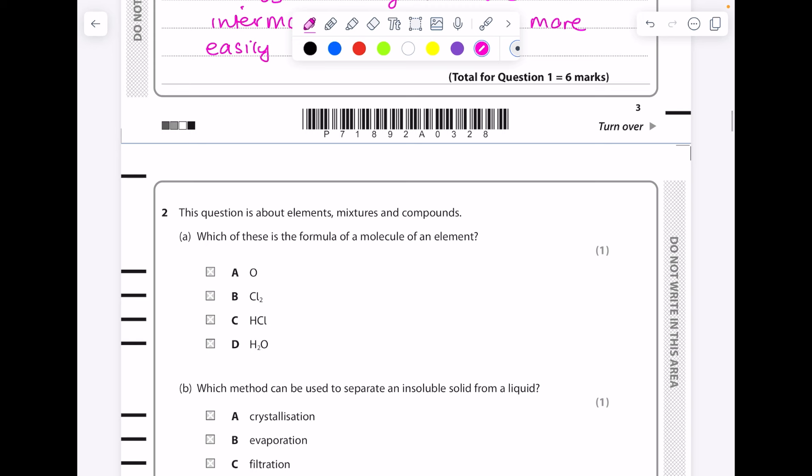This question is about elements, mixtures, and compounds. Which of these is a formula of a molecule of an element? So a molecule is two or more atoms bonded together, so not that. This is true. This is a compound. This is a compound. So the answer here is B.